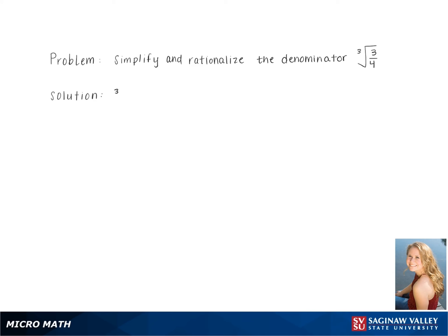To simplify the cube root of 3 fourths, we first split the top and bottom of the fraction. This gives us the cube root of 3 over the cube root of 4.